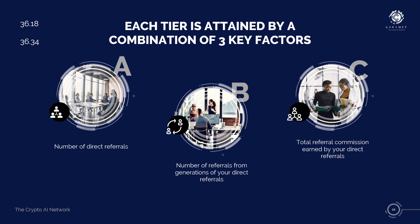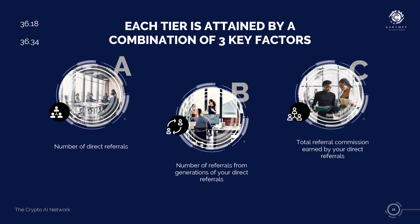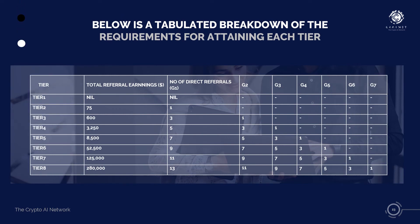Each tier is attained by a combination of three key factors: A. Number of direct referrals. B. Number of referrals from generations of your direct referrals. C. Total referral commission earned by your direct referrals. Tier 1 is the beginner tier — the level you get immediately upon creating an account and purchasing a subscription, when you have no referral activity. To get to Tier 2, you need a minimum referral contribution of $5,000 or to have earned minimum referral commission of $75, implying roughly five direct referrals who subscribe to the Berlin bot at the minimum entry of $1,000.